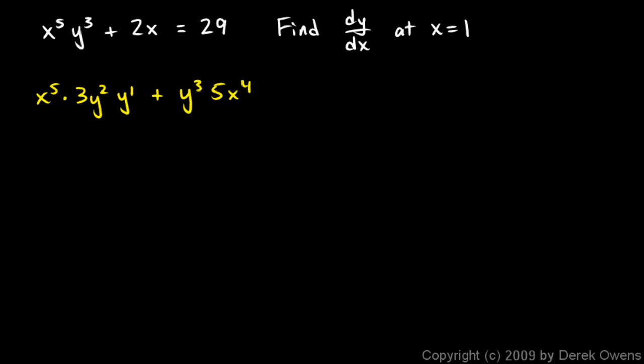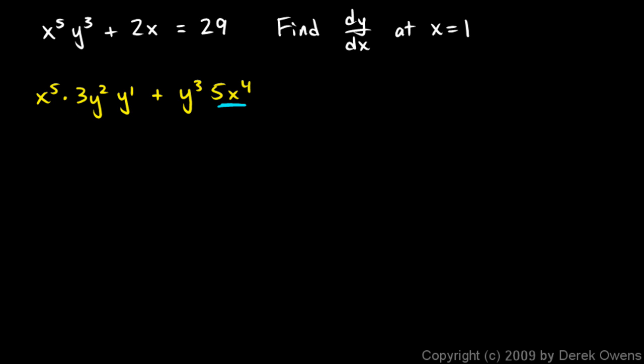When we take the derivative of x to the fifth and get 5x to the fourth, we don't apply the chain rule, because we're taking the derivative with respect to x. But when we took the derivative of y cubed and got 3y squared, we're thinking of y as a function of x. So y cubed is a composed function — there's an inner and outer function — that's why we use the chain rule here but not there.